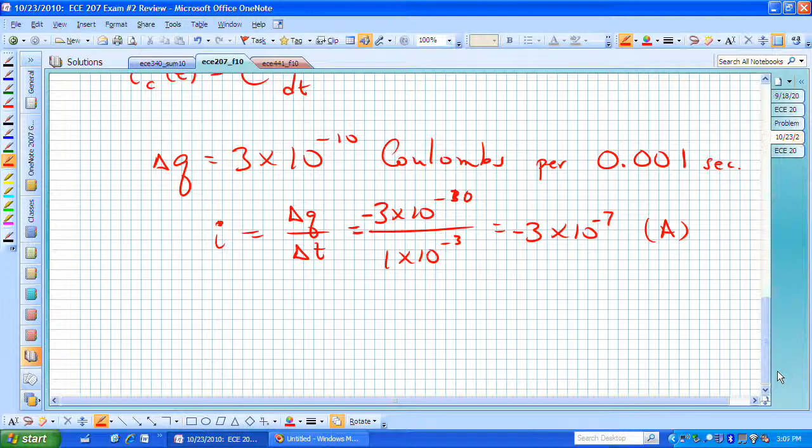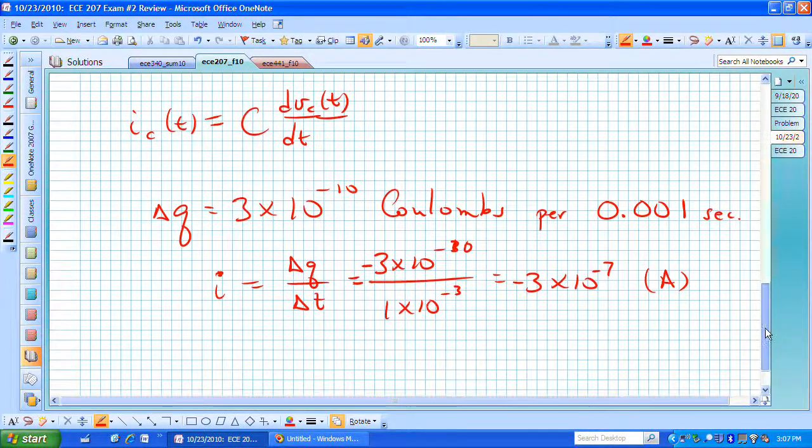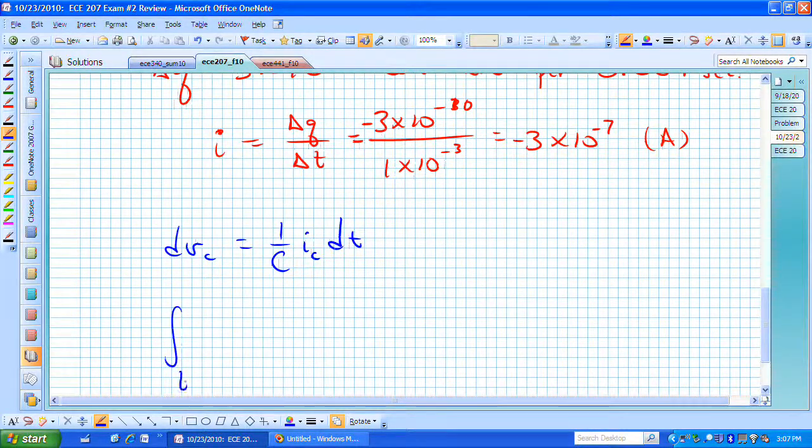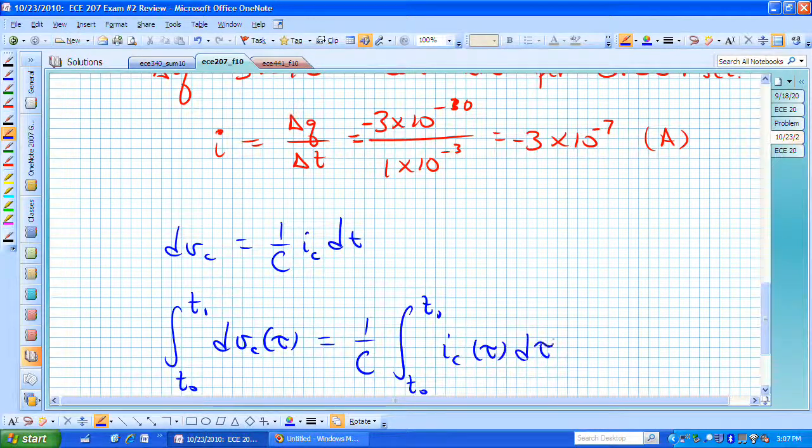We can now solve for our voltage in i equals c dv dt. We can simply say that dv sub c is equal to 1 over c i dt. This allows us now to integrate from t sub 0 to t1 dv sub c of tau which is now 1 over c, that's just a constant, t sub 0 to t1 i sub c of tau d tau.